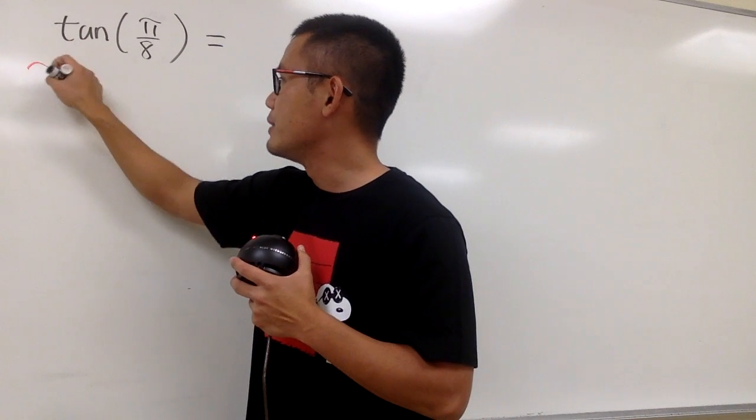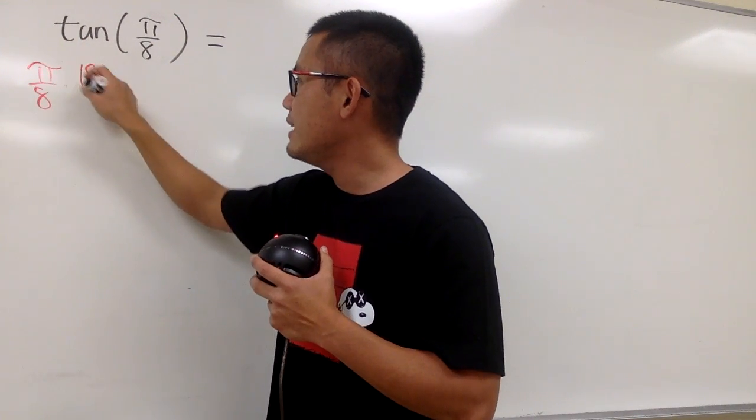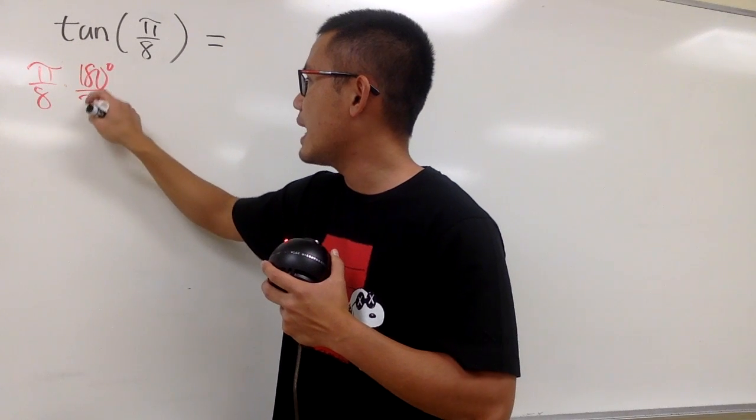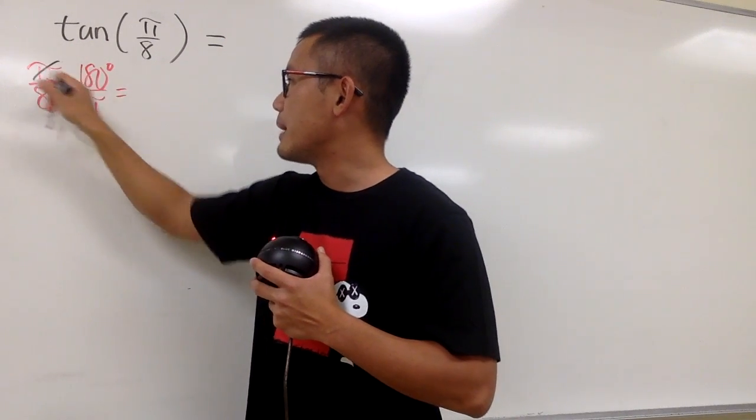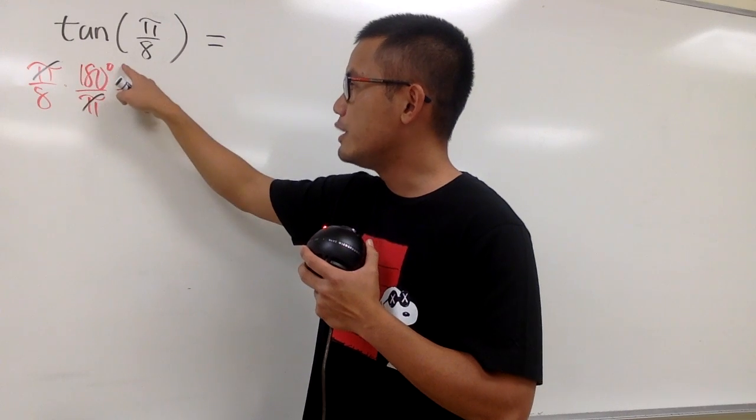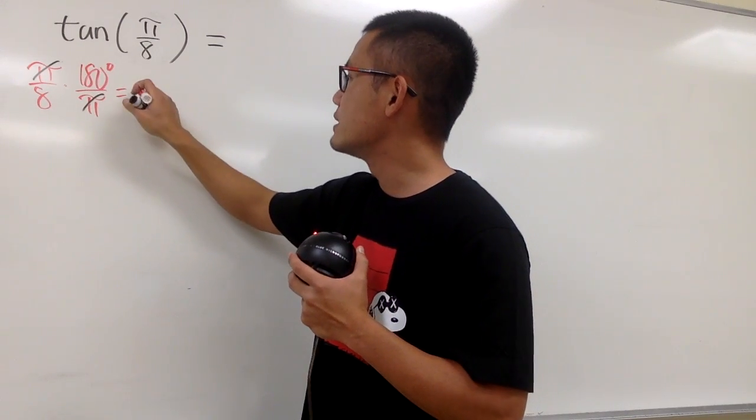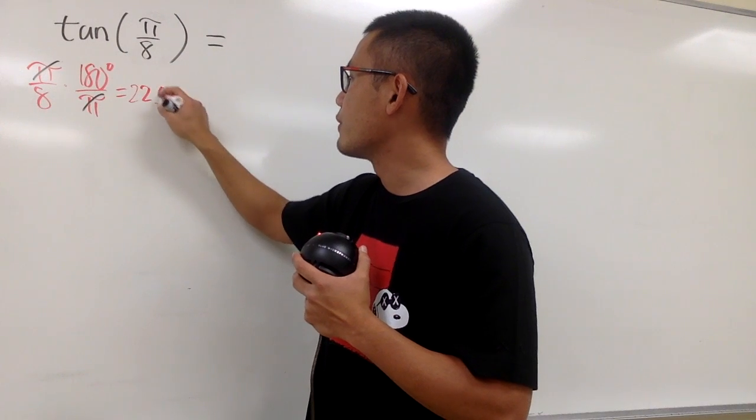Let's put this down: π over 8, and we multiply this by 180 degrees over π. The π's cancel, and now we work it out: 180 degrees divided by 8, which gives us 22.5 degrees.